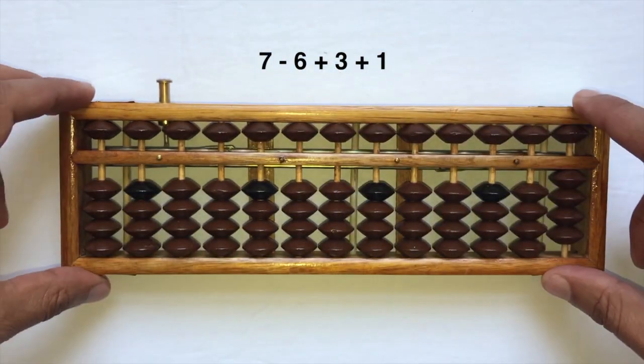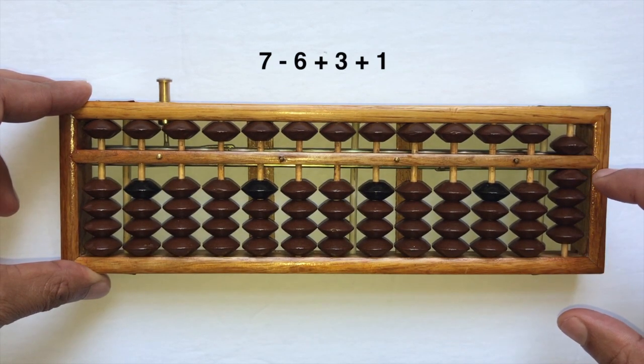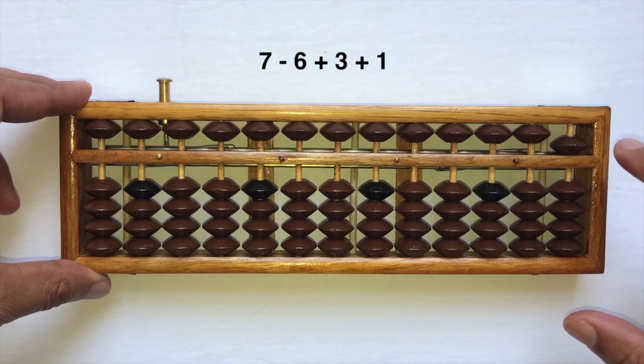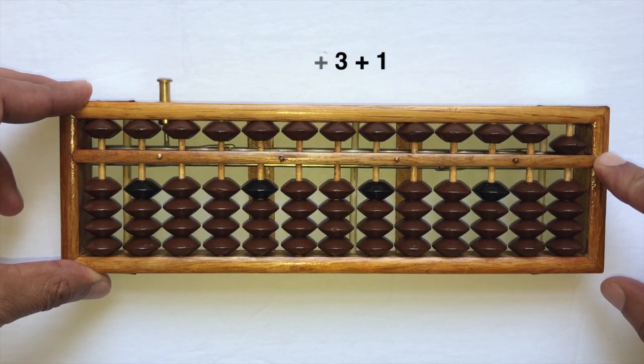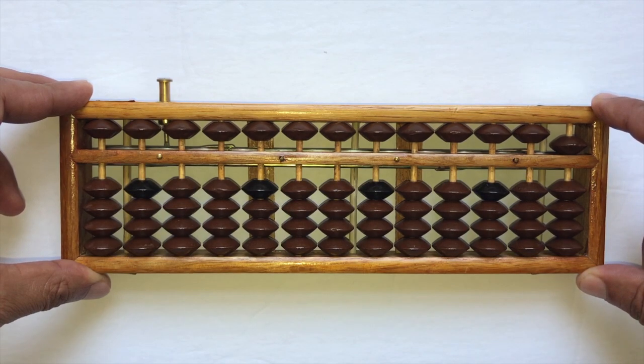Four is one's little friend. So to add a one here, I add five and take away one's little friend, which is a four, giving me an answer of five. Okay, well I know that was quick, but...